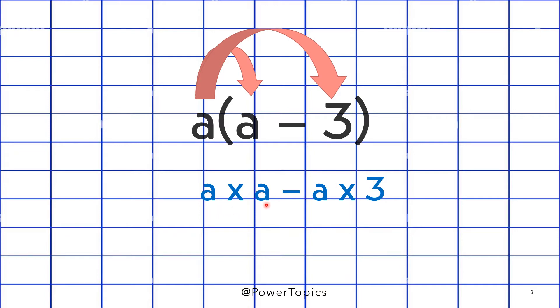And so A multiplied by A will become A square and A multiplied by 3 will become 3A. As you can see we have the same operator here. Now you should see the difference when we multiply a variable by itself and when we multiply a variable by a number. So as you can see it is written in different ways.